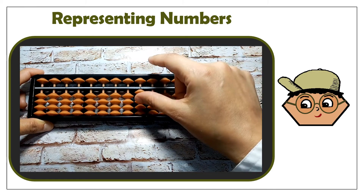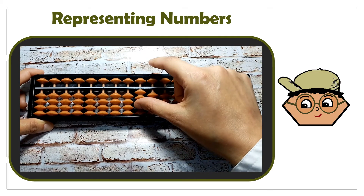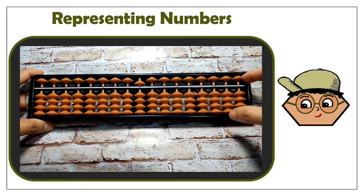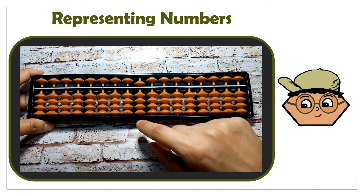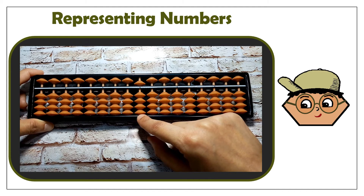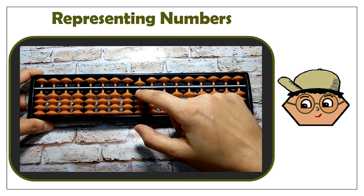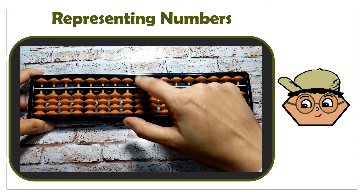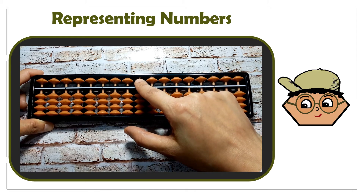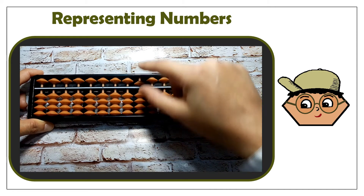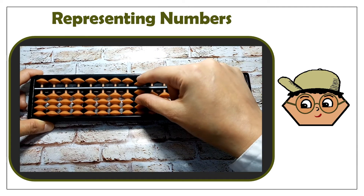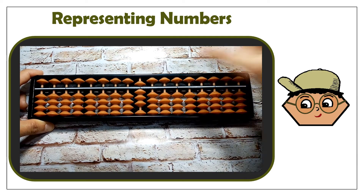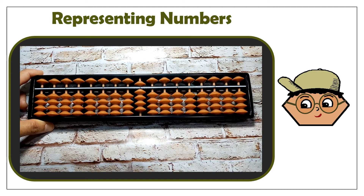This is how you represent 1, 2, 3, 4, and 5. You'll notice that the lower beads each have a value of 1, while the upper bead has a value of 5. So this is 5, and this is how you make 6. This is 7 — it's 5 and 2. This is 8, and this is 9.